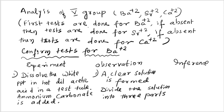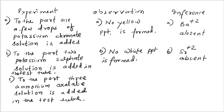In group five, we do confirm tests one by one — first for Ba²⁺, then Sr²⁺, then Ca²⁺. The white precipitate is dissolved in hot dilute acid to get a clear solution, then ammonium carbonate is added. The clear solution is divided into three parts. This confirms it may be Ba²⁺, Sr²⁺, or Ca²⁺.